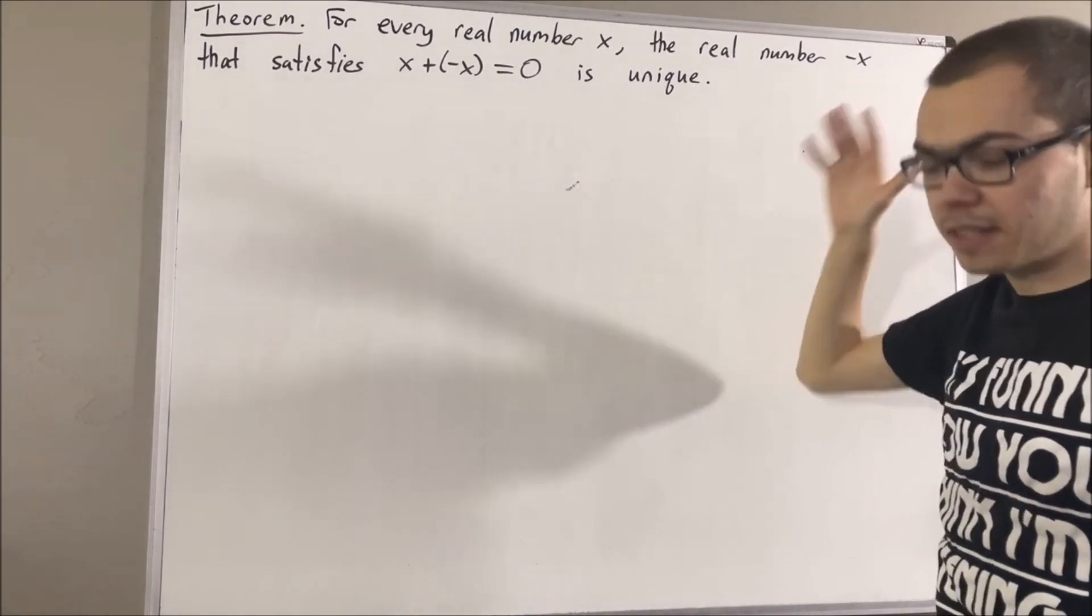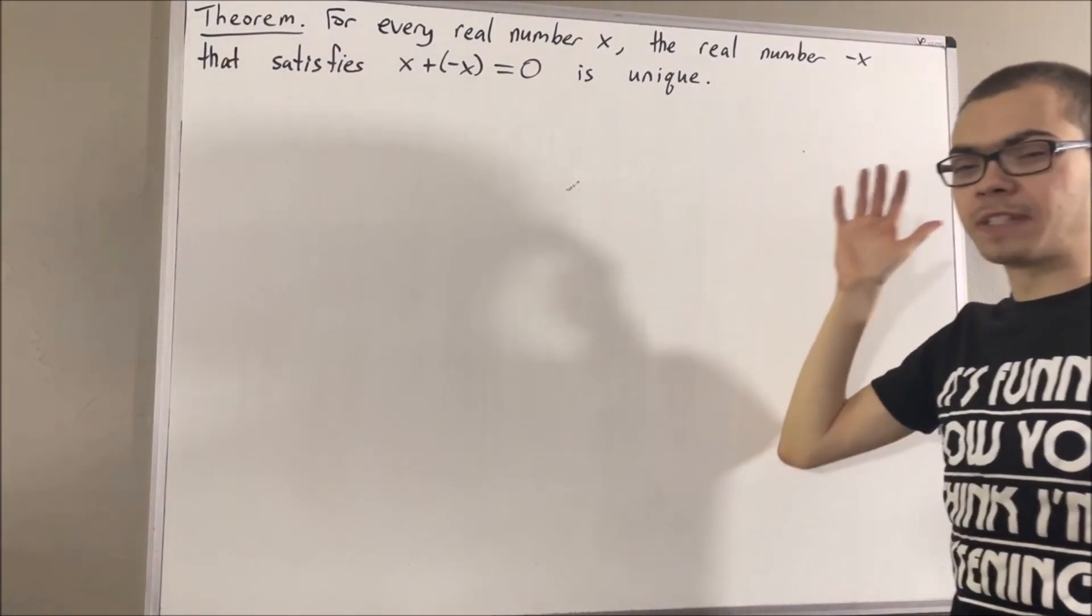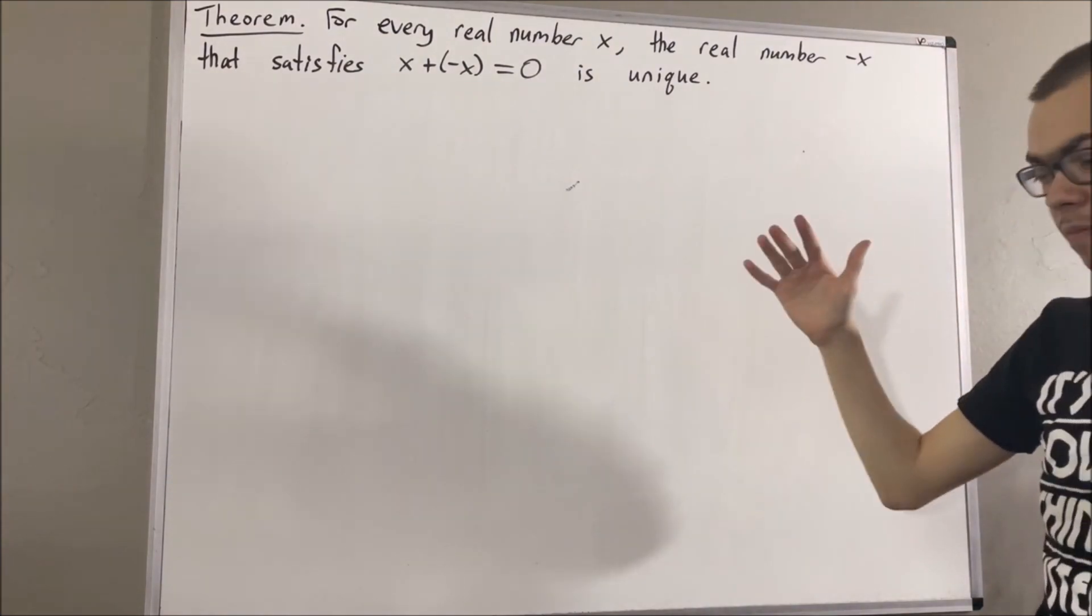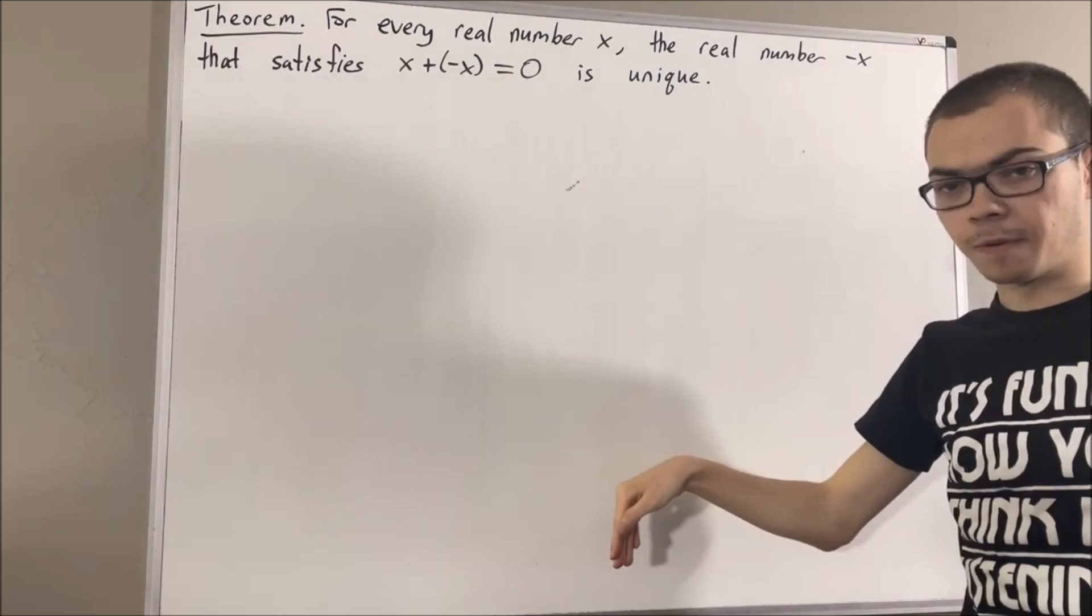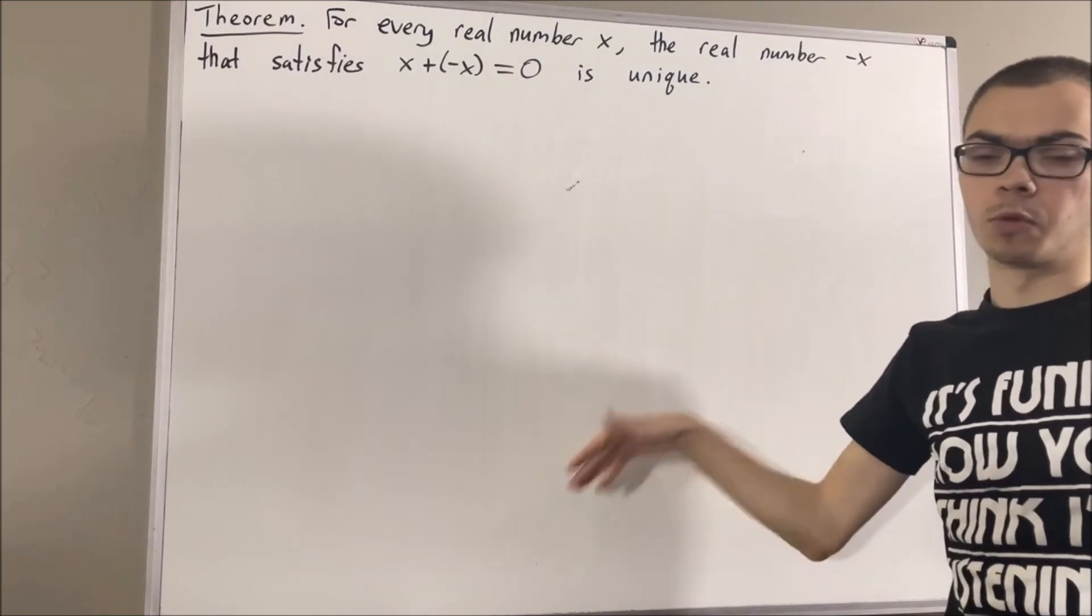Now, in this series, we are using a list of 10 axioms for the real number system, and I'll leave that list of axioms in the description of the video below, and I'll also include a description of the real number system.